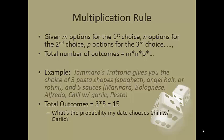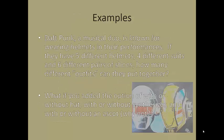So another example, Daft Punk, a musical duo, is known for wearing helmets in their performances. They like to be anonymous. So let's say they have 5 different helmets, 4 different suits, and 6 different pairs of shoes. How many different outfits can they put together? Well I'm gonna have 5 options for my first choice, 4 for my second, 6 for my third. Now bear in mind this is multiplication. I can do this in any order I want to, so if I did the shoes first it wouldn't affect anything.